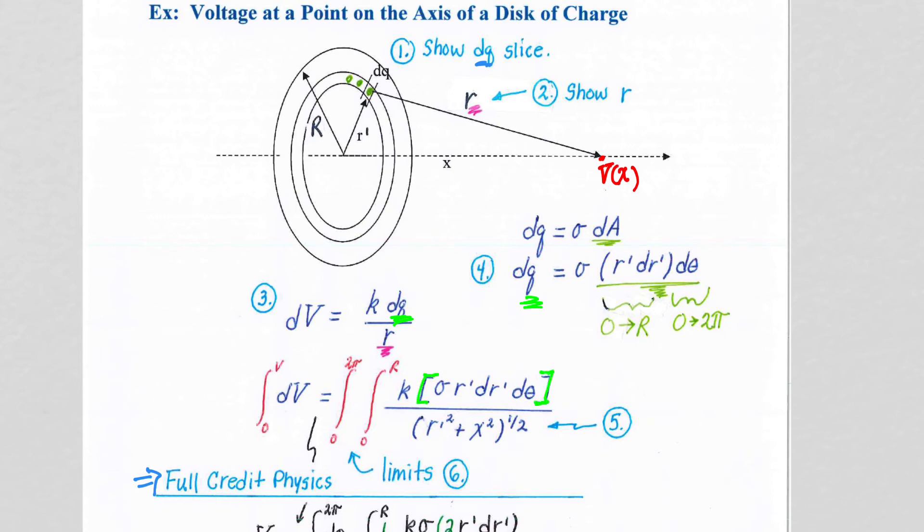And one of the hardest parts, believe it or not, is the limits. We are integrating the dr prime and we are integrating the d theta. The dr prime goes from 0 to capital R. The d theta goes from 0 to 2 pi, and that gives us the whole plate.